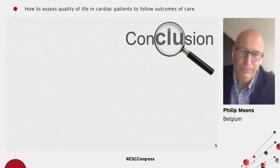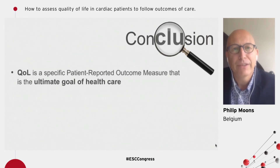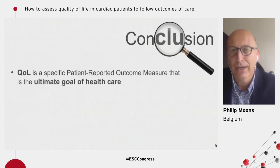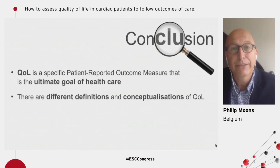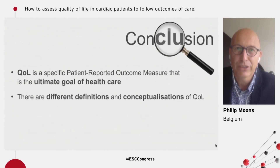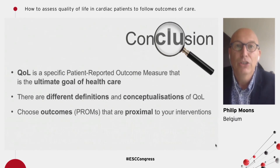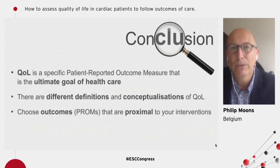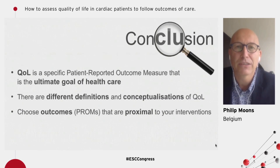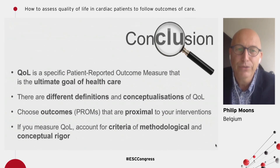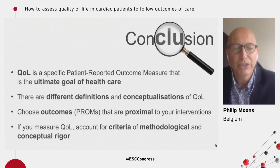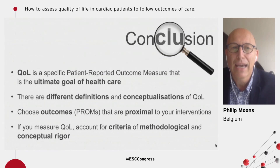In conclusion: quality of life is a specific patient-reported outcome and the ultimate goal of healthcare, as derived from the Wilson and Cleary model. There are different definitions and conceptualizations of quality of life, and this forces us to clarify what we mean when doing quality of life studies. Choose outcomes that are most proximal to your interventions — quality of life in many cases will be too distal from your main variables of interest. And finally, if you are doing quality of life research, make sure that you account for criteria of methodological and conceptual rigor.